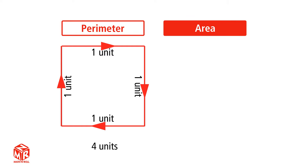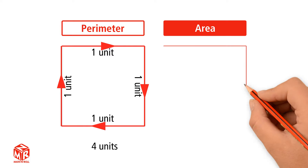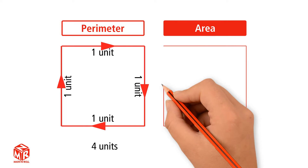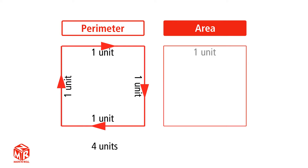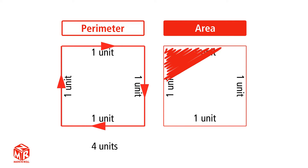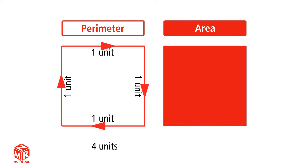Area tells us the number of unit squares needed to fill a flat surface. A unit square is a square whose side length is 1 unit. It has an area of 1 square unit.